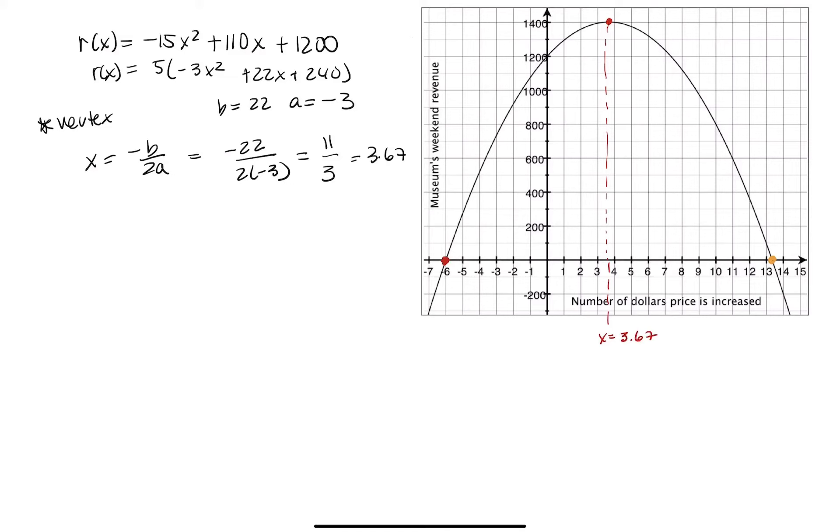Now, to find the y value, go ahead and evaluate r at negative b over 2a. So whatever value you get using this formula, go ahead and put it in for r. So I have 5 times negative 3 times 11 over 3 squared plus 22 times 11 over 3 plus 240.